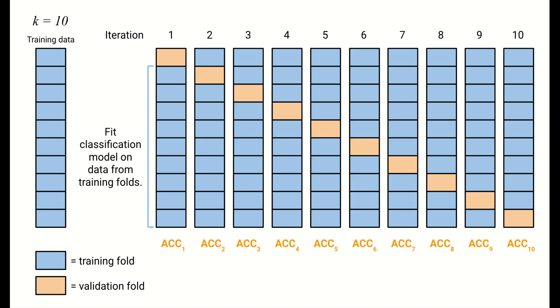Overall, there are 10 iterations, one for each possible validation fold, and we get 10 estimated accuracies. We average these to get an estimate of the true accuracy on new data, the test accuracy.